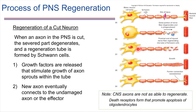The Schwann cells provide what's called a regeneration tube and secrete growth factors, so this axon will tend to regrow. It takes time — transport has to happen down this axon to get raw materials down here. But over time, the axon will grow back through that tube of Schwann cells, and the Schwann cells essentially guide it in the right direction. Eventually that axon can re-make a connection with a muscle or whatever target was there. So regeneration is possible in the peripheral nervous system because of the Schwann cells.